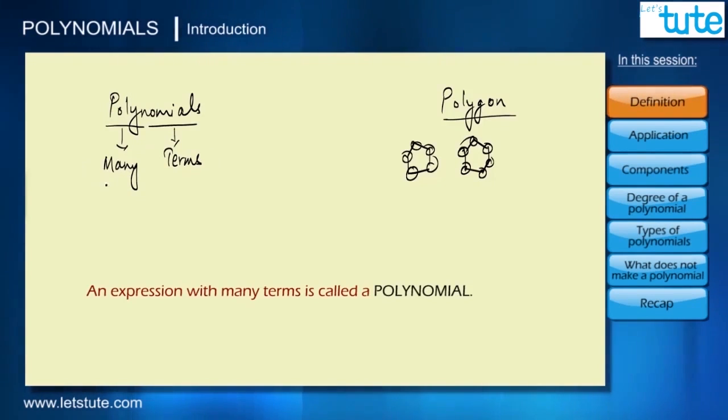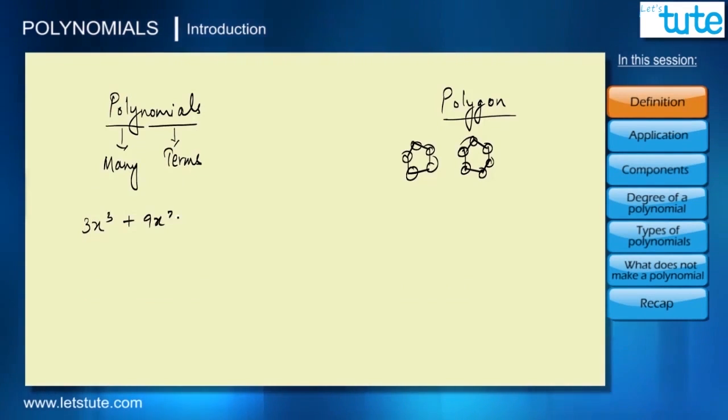So an expression with many terms will be called polynomials. Let's take an example: 3x³ + 9x² - 2x - 7. The exact definition of polynomial is an expression which has more than three terms. We can see there are four terms in this, that's why it's called a polynomial.